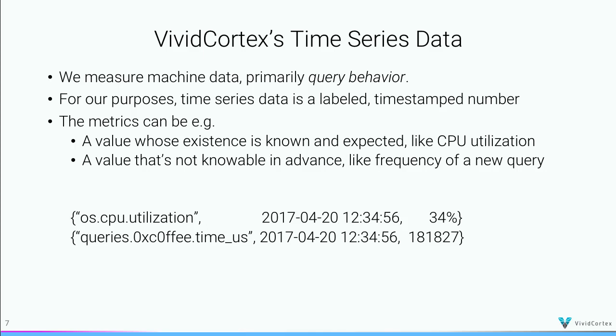These metrics can be things you know in advance — CPU utilization will always be a number. But you don't know whether the query that puts an item into the shopping cart actually occurred in a given time range. Some metrics will be very dense, running basically constantly. Others will be sparse — like a batch job that runs once a day, or an ad hoc query run once ever in history. So there's a wide range of sparseness. The simplest form of our metric representation is a label, a timestamp, and a numeric value.